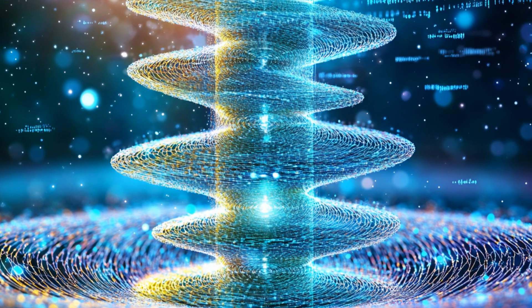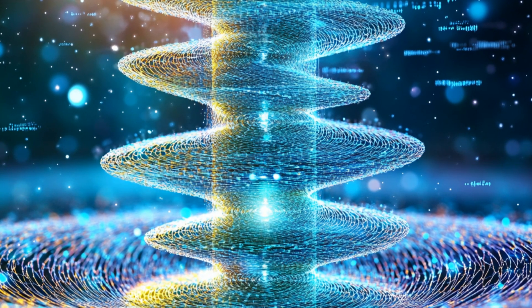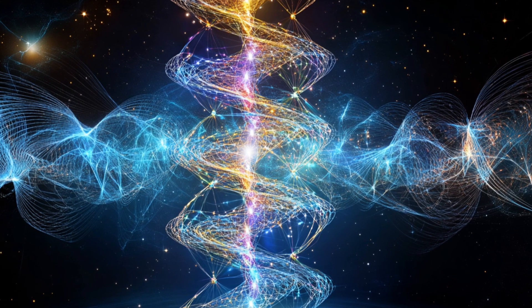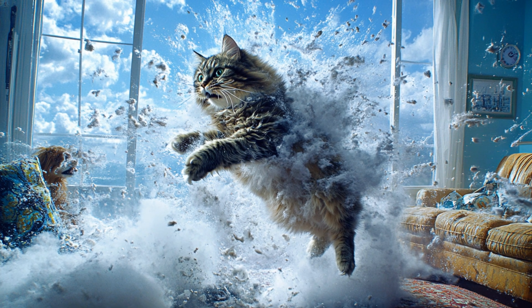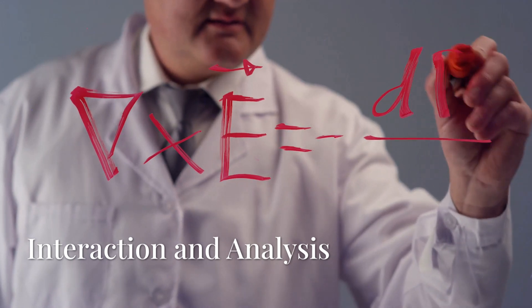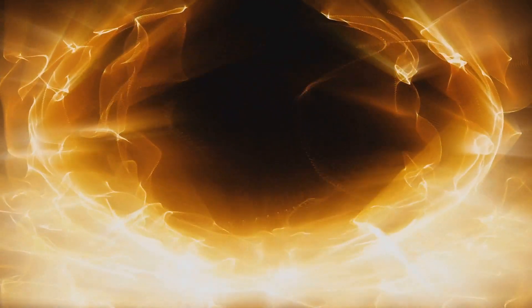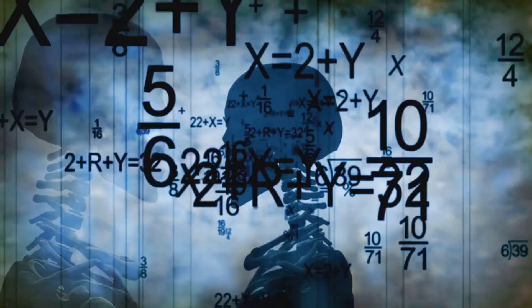Introduce new terms in the equations that account for the fractal deformation of the energy field, denoted as E_FRACTAL and Γ_FRACTAL respectively. These terms would be dependent on the fractal dimension of the energy field D and the properties of the subatomic particles such as mass, charge and spin. Develop equations that describe this relationship, and combine the energy levels and decay rates as described by E = E_QFT + E_FRACTAL with the fractal deformation of the energy field as described by the fractal dimension D.